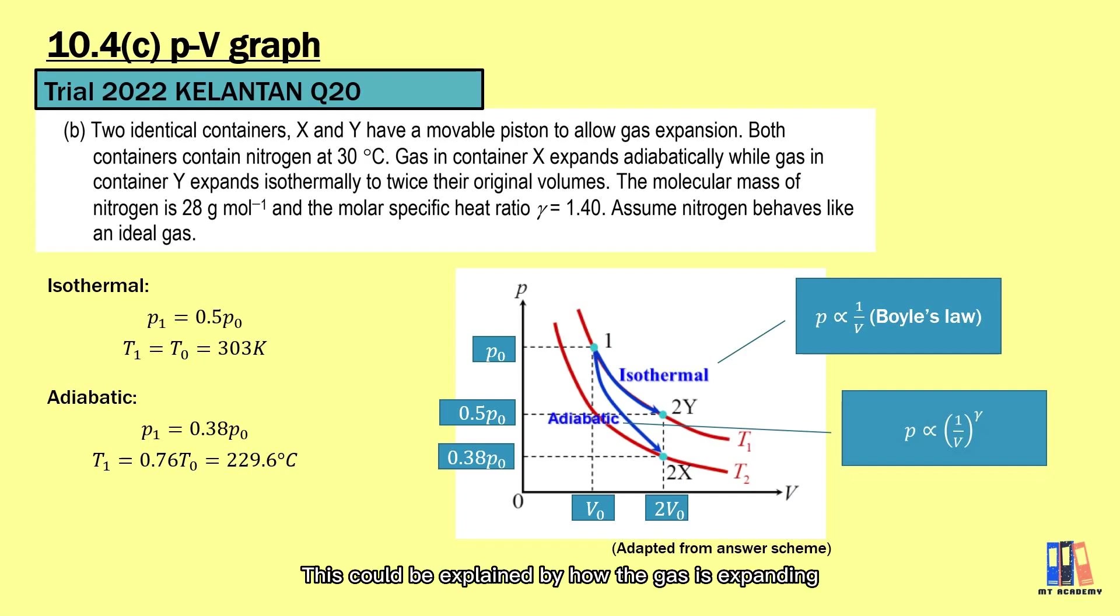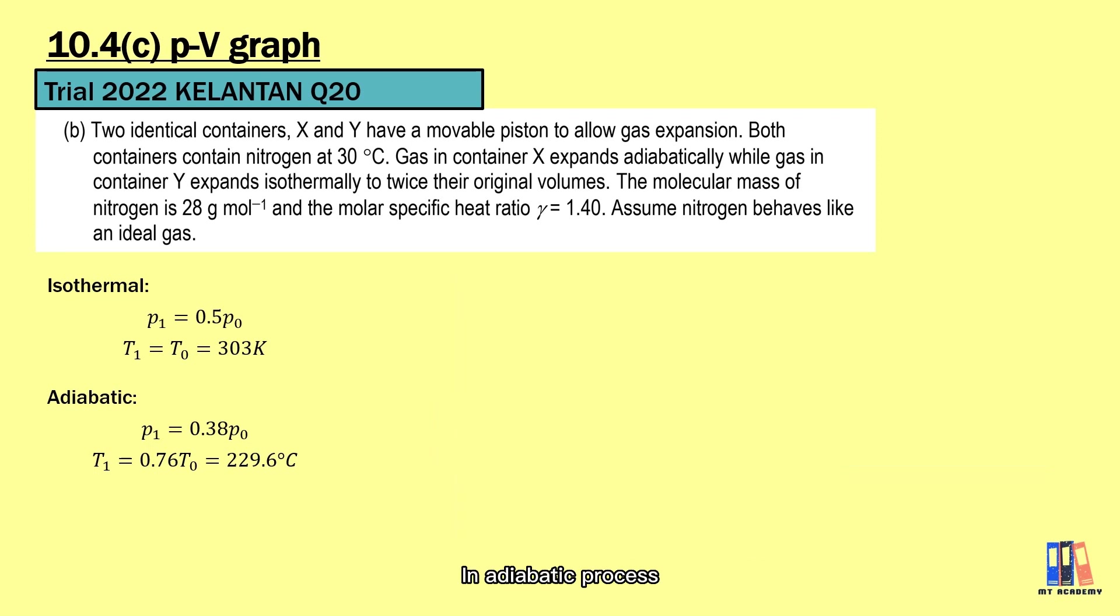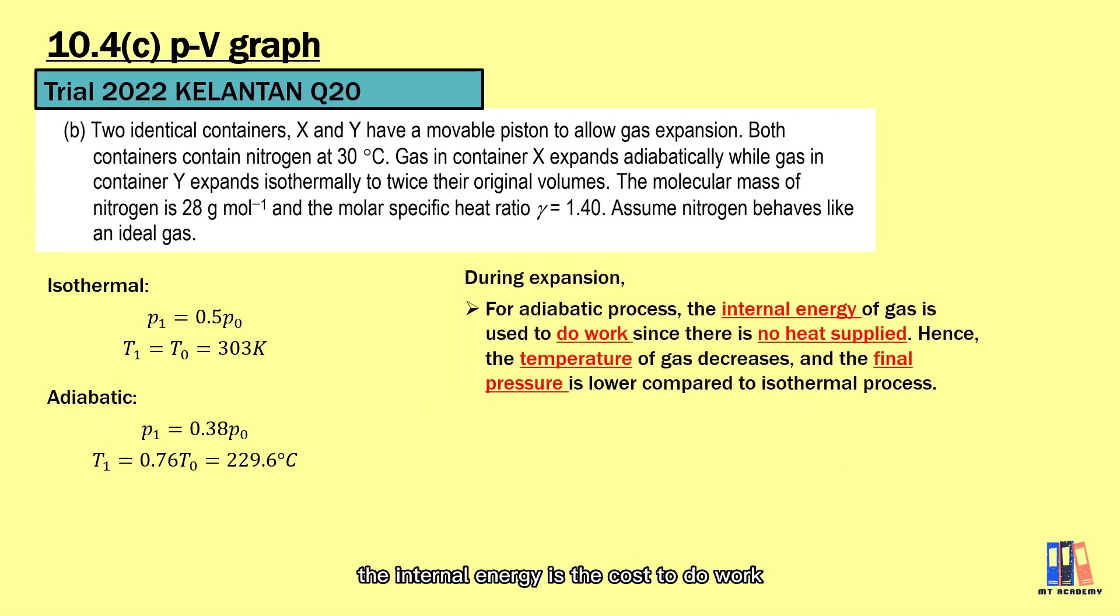This could be explained by how the gas is expanding. In adiabatic process, the internal energy of gas is used to do work since there is no heat supply. Hence, the temperature reduced as the volume expands. You could see that the final pressure is reduced to even lower value compared to isothermal process.